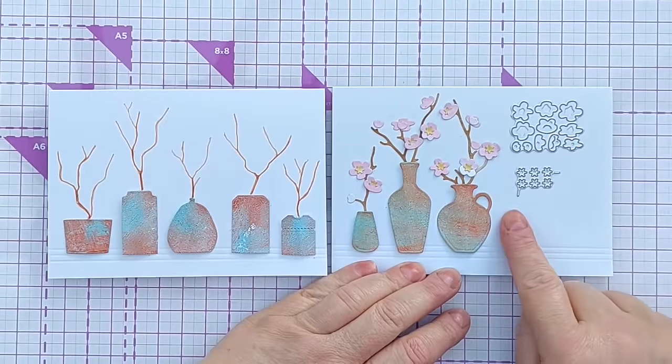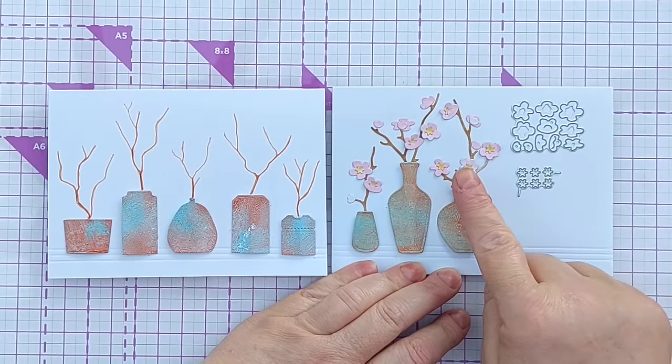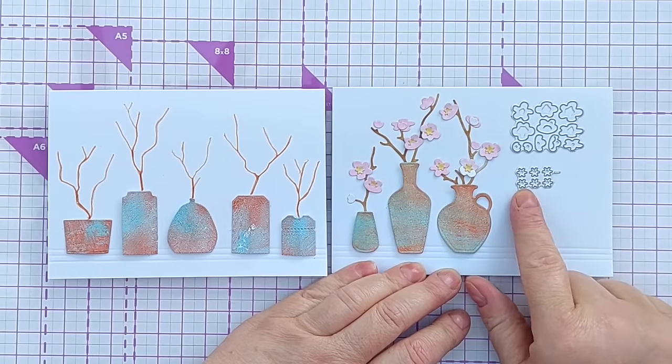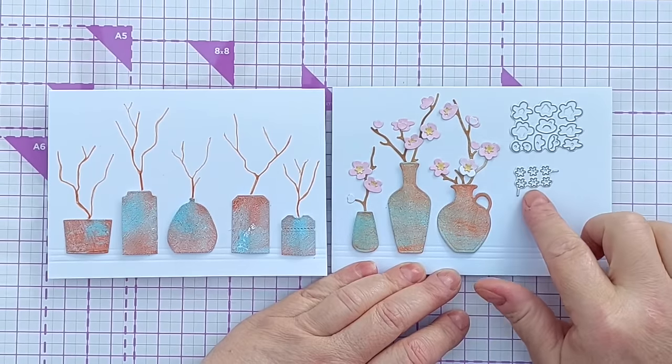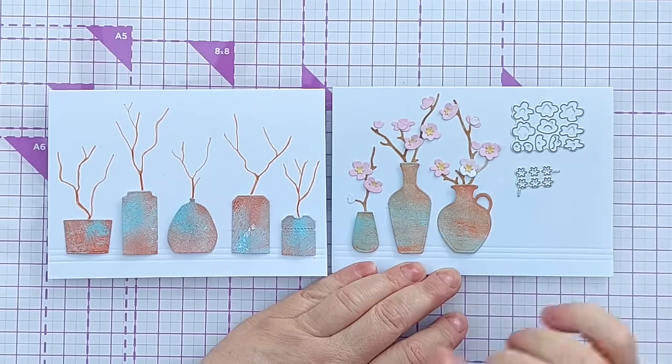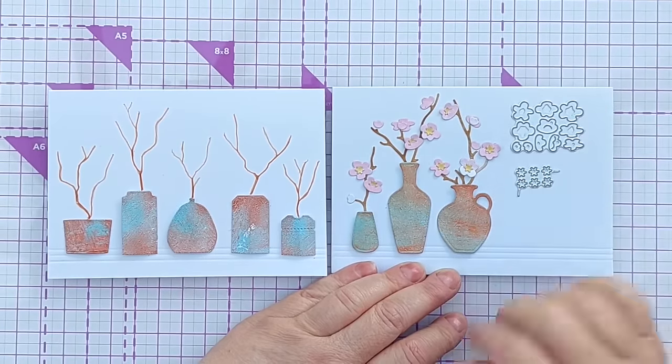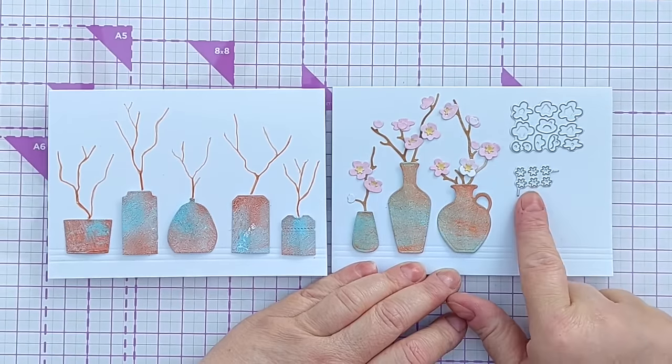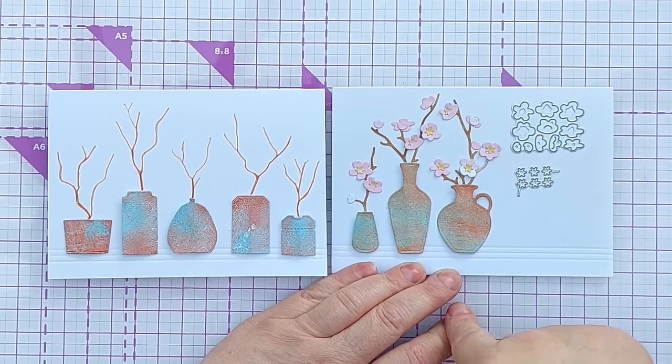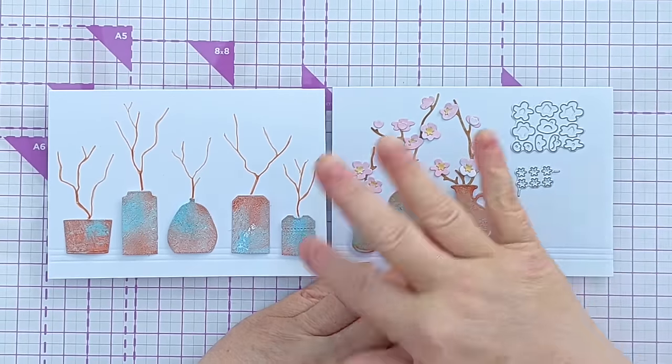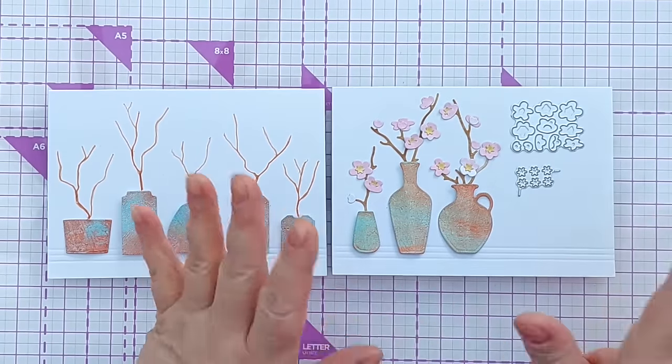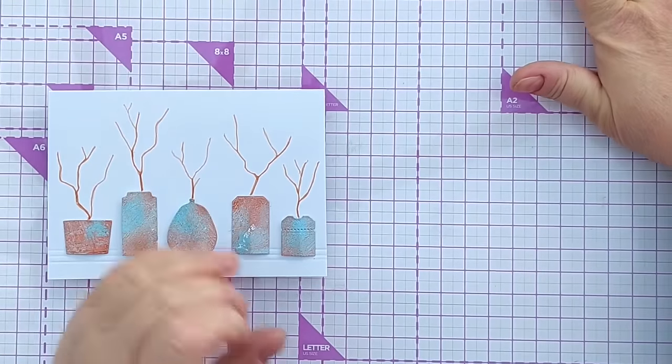These are the flower dies that came with this set and you've got different shaped flowers and some inside the middle bit of the flower and all I did was colour some paper with spun sugar distress oxide, die cut out lots of these little flowers and this one I coloured card with scattered straw and then die cut out those, put the flowers together and stuck them on in a pleasing arrangement. But of course you can use any small flower dies that you have in your stash.